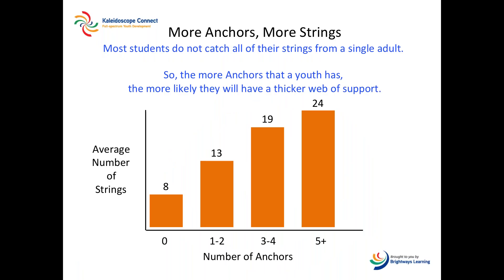The Student Support Card shows that the thicker the web of support a young person has, then the more likely they are to succeed in school and to make wise choices in regards to their mental, emotional, and physical health. It reveals that the more anchors a youth has, then the more strings they have in their web of support. It also exposes how likely the youth will remain alcohol and drug-free and to practice refusal skills when faced with dangerous situations.